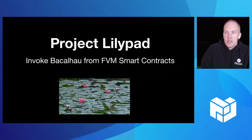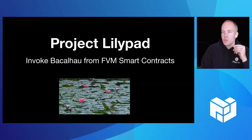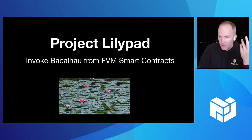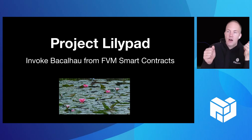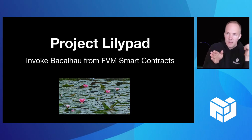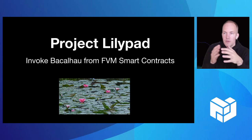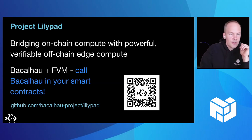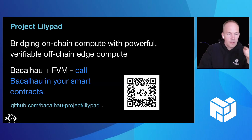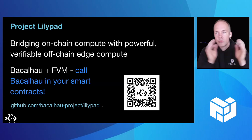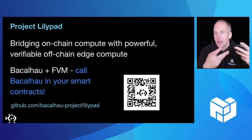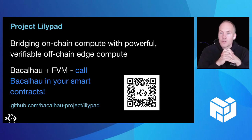Project LilyPad is the bridge between layer one and layer two. It's two components. One is a smart contract on the Filecoin Virtual Machine that's listening for events — when people want to invoke a Back of Yow job. Secondly, it's an off-chain daemon that listens for events triggered through the LilyPad smart contract and then actually triggers those Back of Yow jobs. Please find out more at the website and GitHub where you can see the source code. This is a component we will potentially open up to broader use cases.